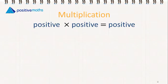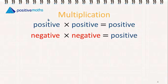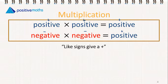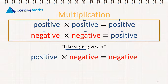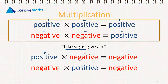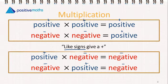For multiplication of integers, if the signs are the same, the result is positive. A plus multiplied by a plus gives us a plus, and a minus multiplied by a minus gives us a plus. So like signs give us a plus. When the signs are different, a plus multiplied by a minus gives us a minus, and a minus multiplied by a plus gives us a minus. So unlike signs give us a minus.